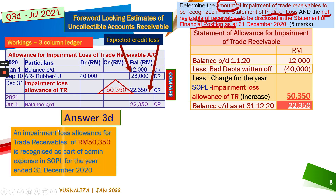Apart from that, you need to state the amount to be shown in the statement of profit or loss, which is 5,350. It is recognized as part of expenses under admin expenses for the period ending 31st December 2020.